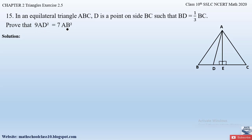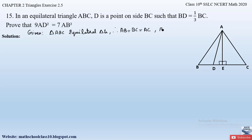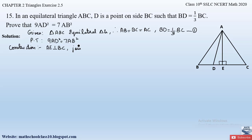Now let us write down what is given, what we have to prove, and the construction. Given: triangle ABC is an equilateral triangle, so AB is equal to BC is equal to AC. Also, BD is equal to one third of BC — let us mark this as equation 1. To prove: 9 AD square is equal to 7 AB square. Construction: we drew altitude AE perpendicular to BC and joined vertex A with point D, that is, join AD.